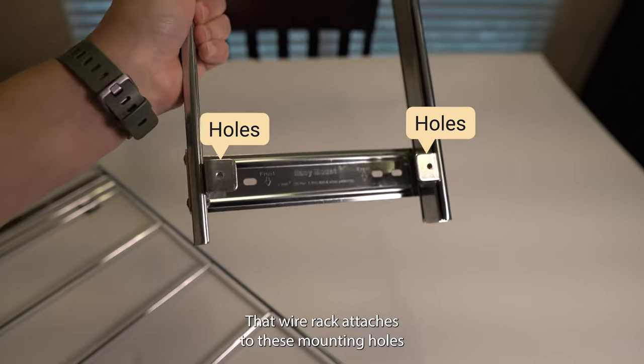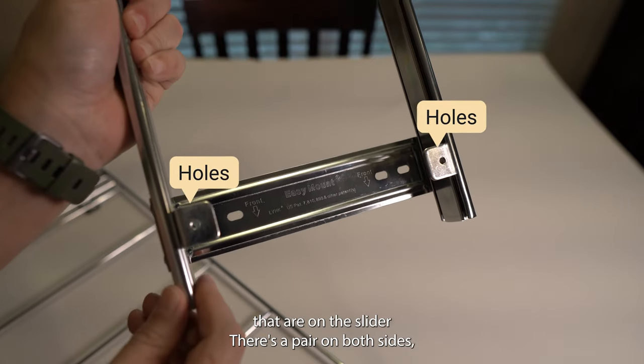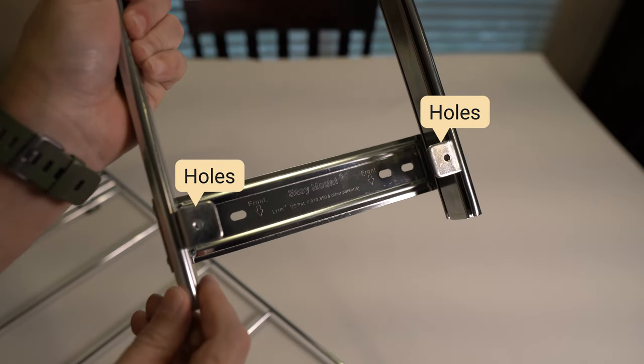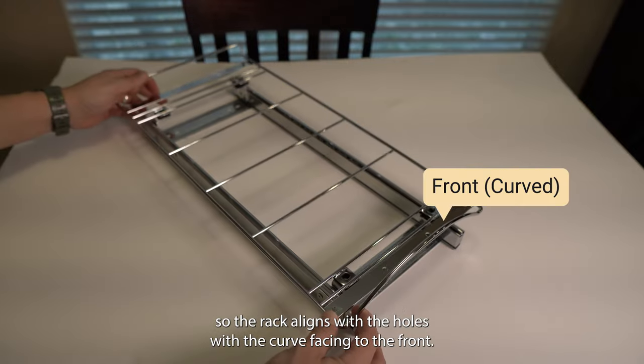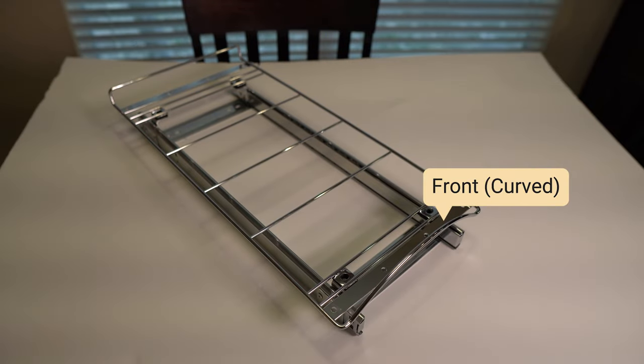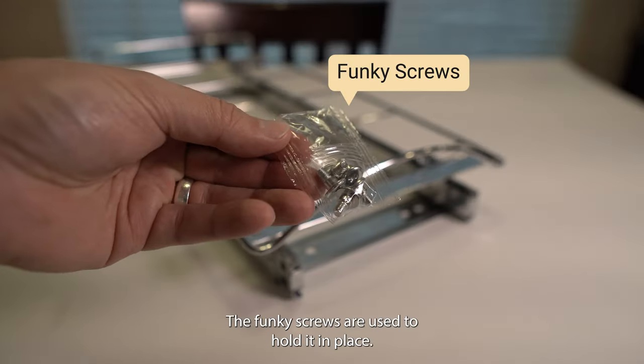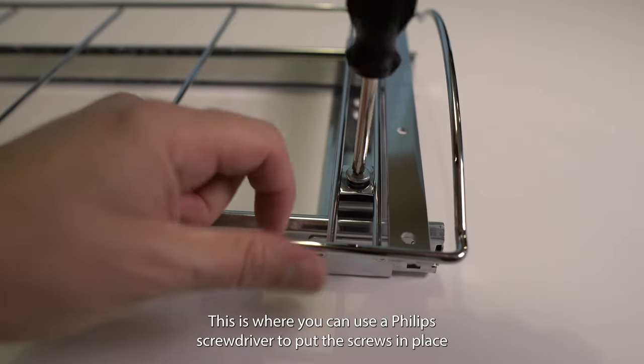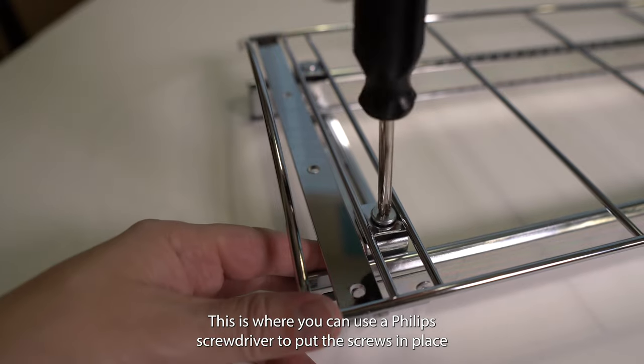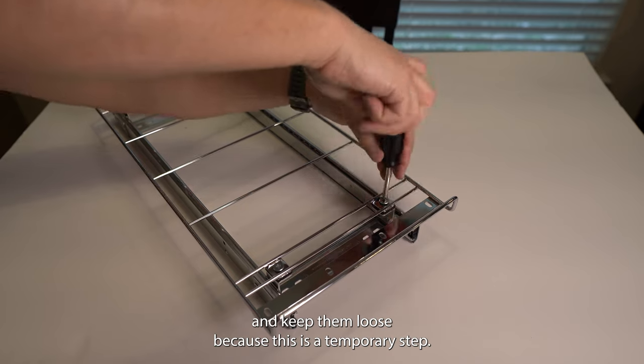That wire rack attaches to these mounting holes that are on the slider. There's a pair on both sides. So the rack aligns with the holes with the curve facing to the front. The funky screws are used to hold it in place. This is where you're going to use a Phillips head screwdriver to put the screws in place, and keep them loose because this is a temporary step.